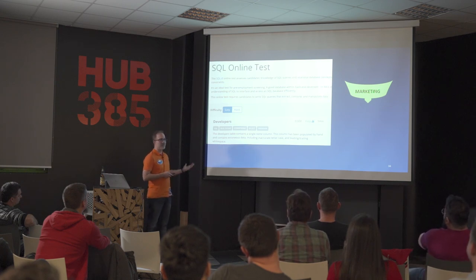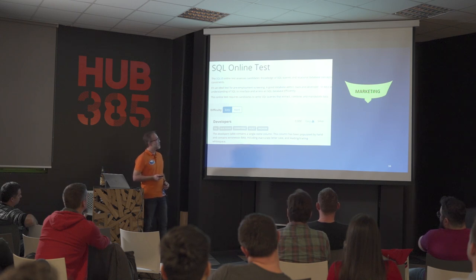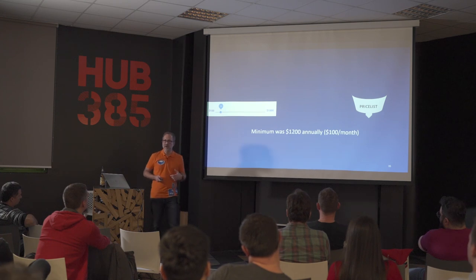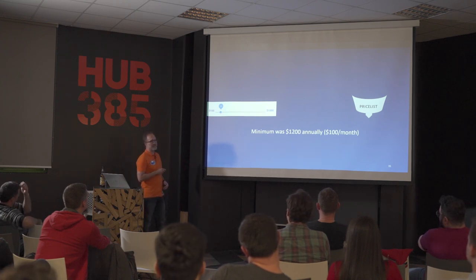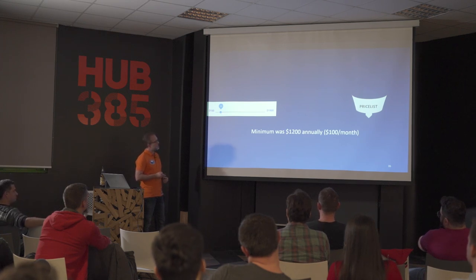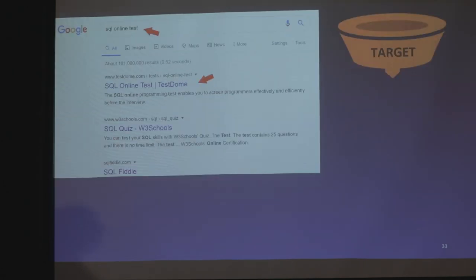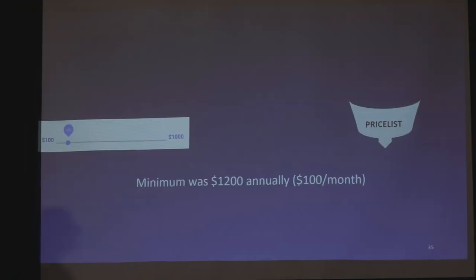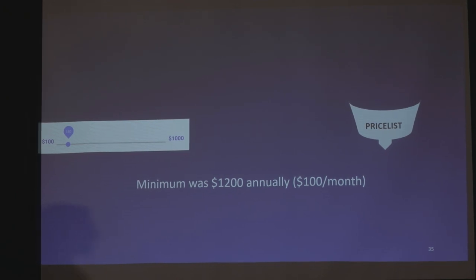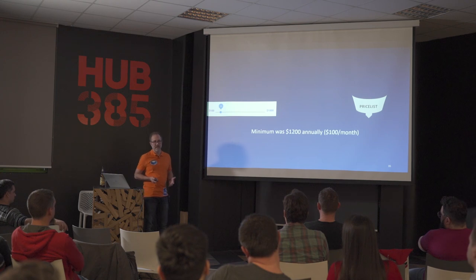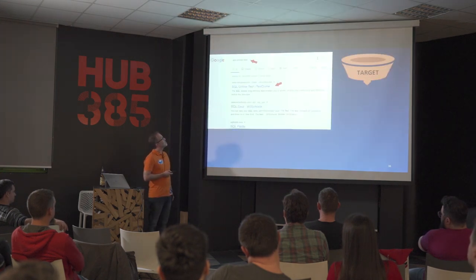Our target user is somebody with an immediate problem. They have a job ad for a database programmer and want an online test to screen for SQL knowledge. They search 'SQL online test' and find us on the first page of Google. They come to our website, see a nice explanation of what the SQL test covers, and even a sample question. Then they arrived at a pricing page with a slider to select monthly payment. If they selected $100 a month, that meant $1,200 annually. Someone who needs to screen six developers right now, committing to $1,200 a year — they're going to say 'no way.'